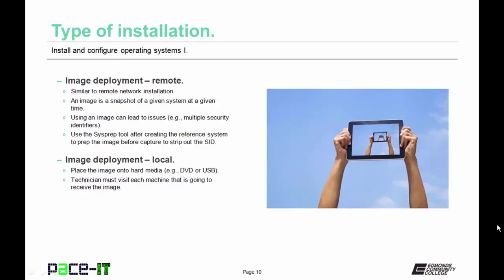Let's talk about image deployment remote — it is very similar to a remote network installation. An image is a snapshot of a given system at a given time. Using an image can lead to problems such as multiple security identifiers. If you use the sysprep tool after creating the reference system, you can strip out the SID before capturing the image. For image deployment local, you place the image onto hard media — DVD, USB, or portable hard drive — and visit each machine, deploying the image one by one.